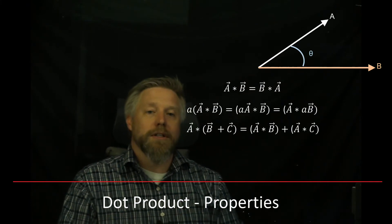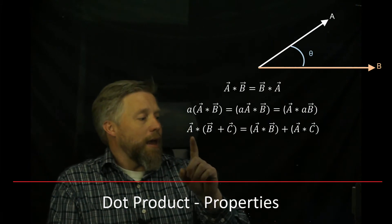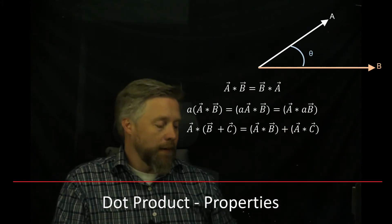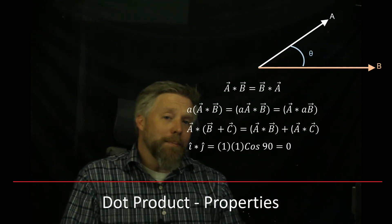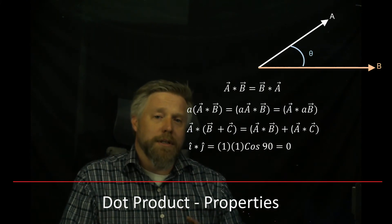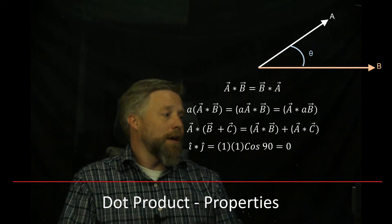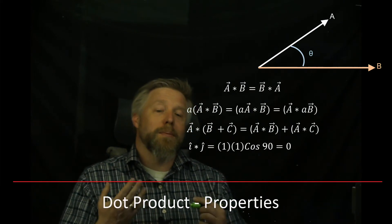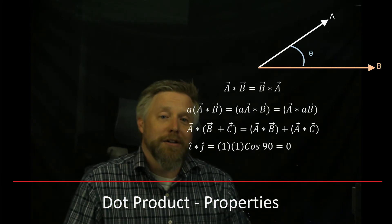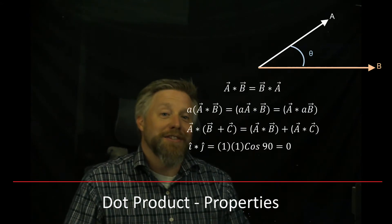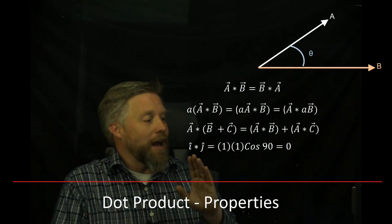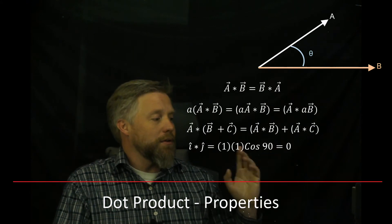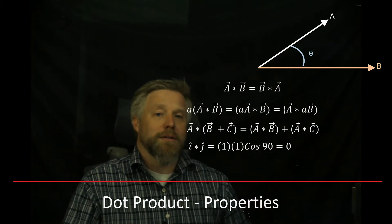The next property is distributing a dot product, which works exactly as you'd expect with scalars: A dotted with (B plus C) equals A dotted with B, plus A dotted with C. Finally, when we dot two vectors that are perpendicular to each other, the cosine of 90 degrees is zero, so the result is always zero — for example, dotting unit vectors i and j always gives zero.